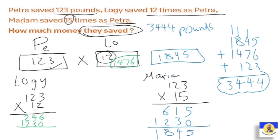So we found Loji's amount alone, Maryam's amount alone, and then the total for all of them together.